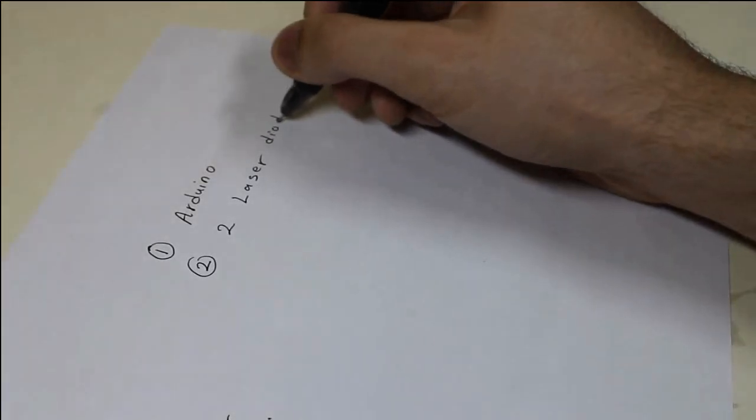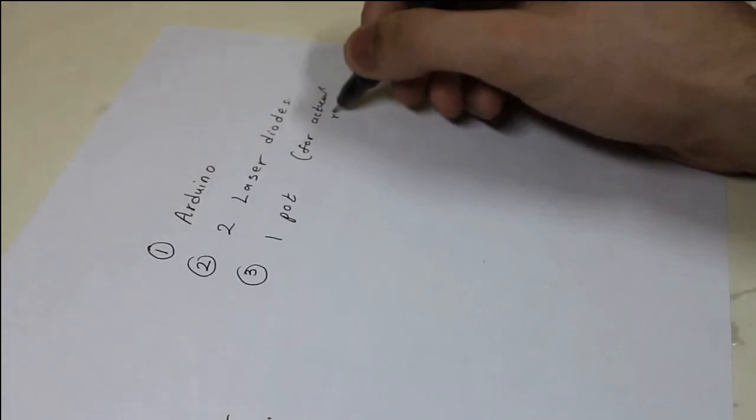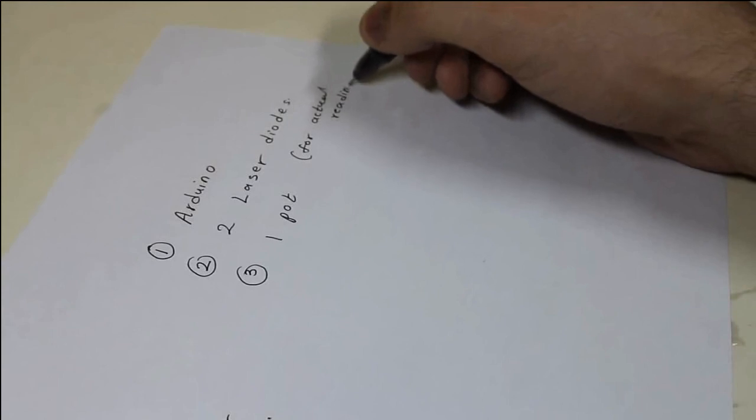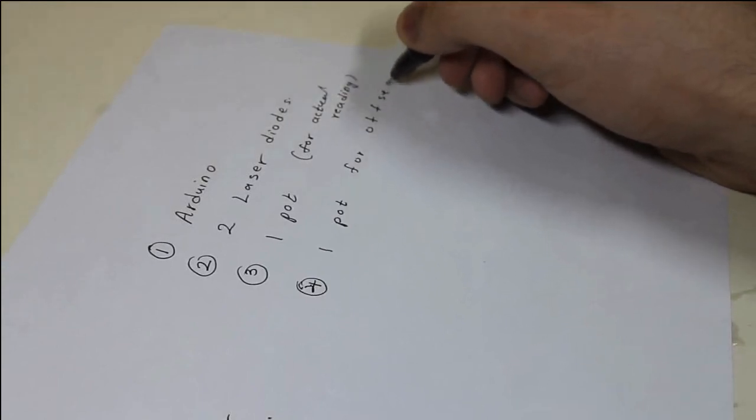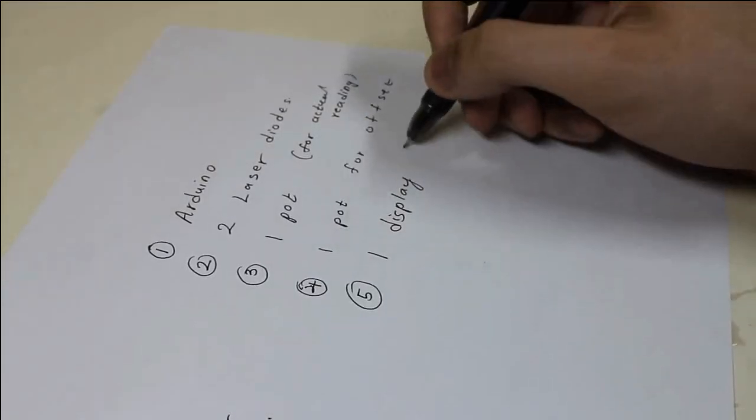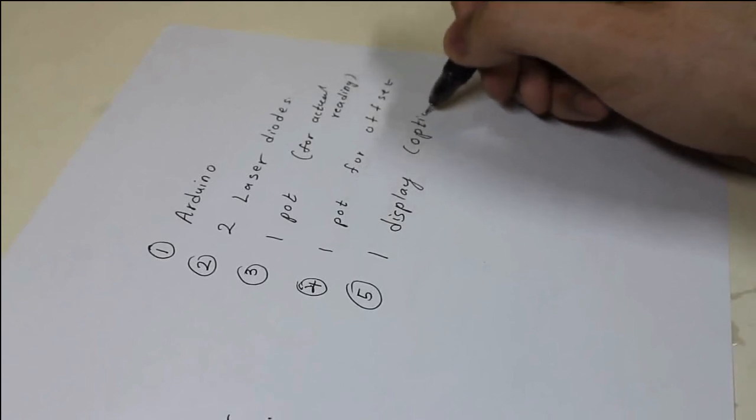Here is a list of things that you will need: an Arduino Nano, two laser diodes, one potentiometer for angle reading, one potentiometer for offset adjustment, and one OLED display which is optional but it's nice if you have it.